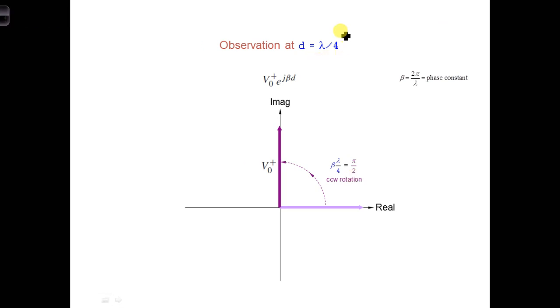At d equals lambda over 4, the exponential term of the voltage phasor simplifies to e to the j pi over 2, since beta is equal to 2 pi over lambda.